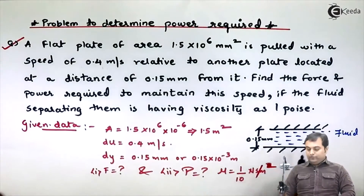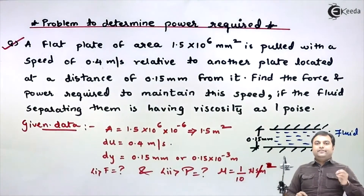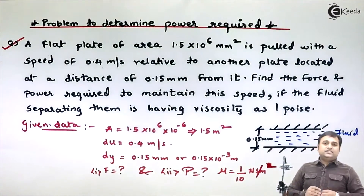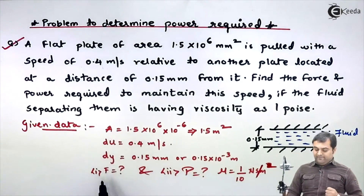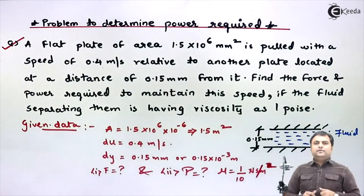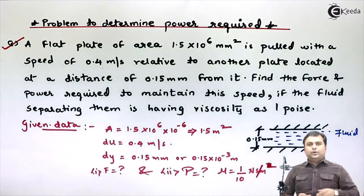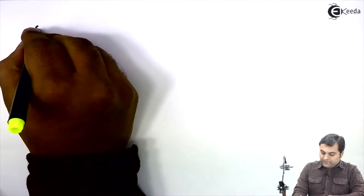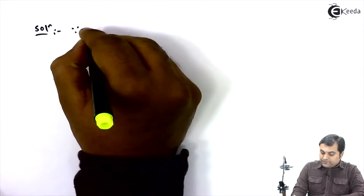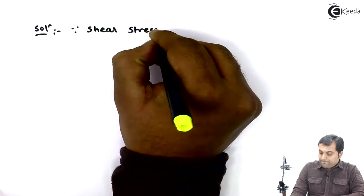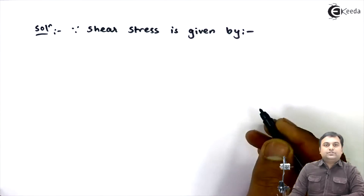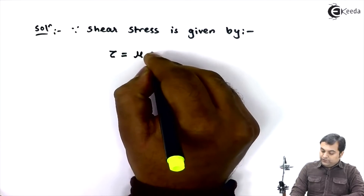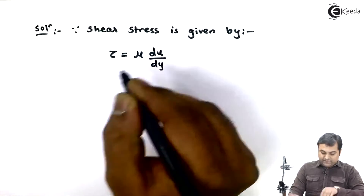First I will find the shear stress, because shear stress equals force divided by area. Since I have the area and need the force, once I get the shear stress, half the problem is solved. From Newton's law of viscosity, shear stress tau = mu × (du/dy).